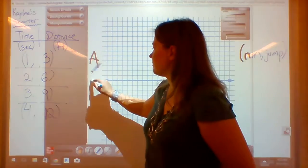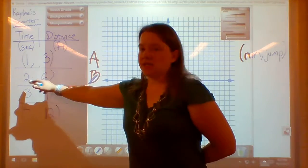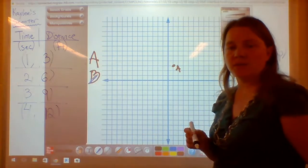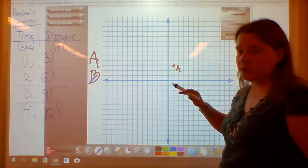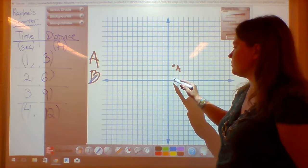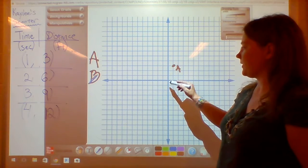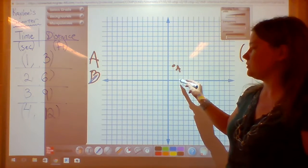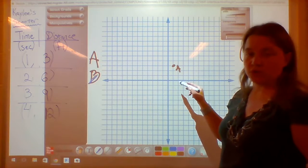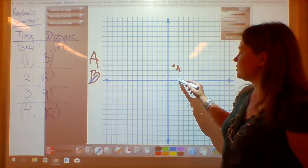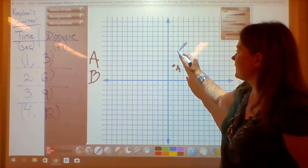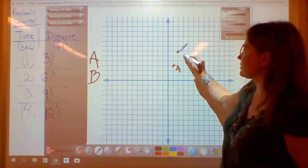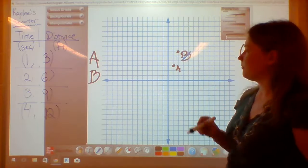My second point, point B, says 2, 6. And what that means, I'm going to start back at the origin because you always start back at the origin. And I'm going to run 2, so I'm going to follow that x coordinate direction to go 2. And then the y coordinate direction, or the jump, says 6. So I'm going to jump 1, 2, 3, 4, 5, 6. And that's going to be my point B.